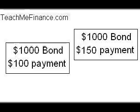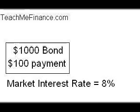On the other hand, let's say that the interest rates went down to 8% — now your bond is more valuable because your bond is paying 10% while bonds that are issued today are only paying 8%. For example, say you have a bond with a par value of $1,000 that pays 10% interest and the current market interest rate is 8%, and perhaps you'd like to sell that bond to someone else.